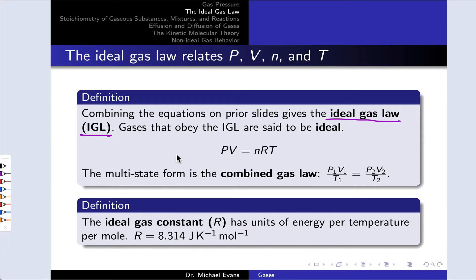Now we can develop a multi-point or multi-state form of the ideal gas law at constant number of moles by dividing both sides of this equation by temperature and realizing that P times V divided by T must be equal to a constant, n times R. And so P1V1 divided by T1 is equal to P2V2 divided by T2. This is known as the combined gas law.